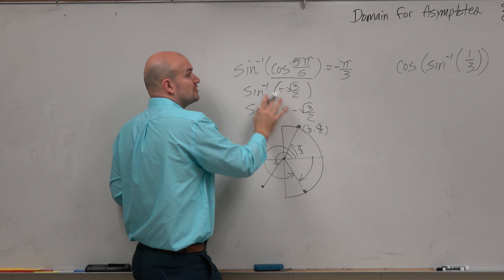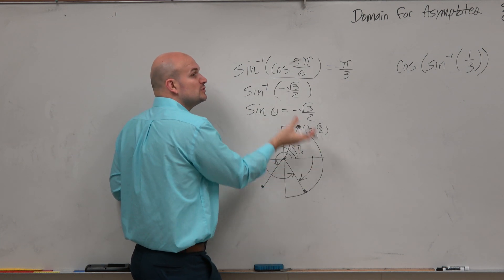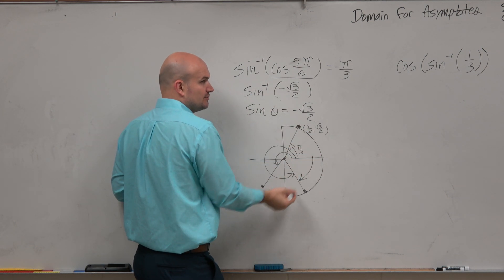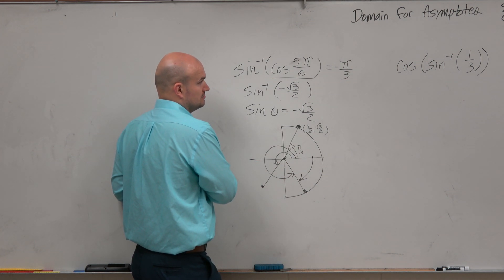When we're doing sine inverse, or cosine inverse, or tan inverse, we're looking for the angle. So the angle is where the restriction is. We're using this function. But if you're just looking for the point, then there's no restriction, because you're just following whatever the angle is.